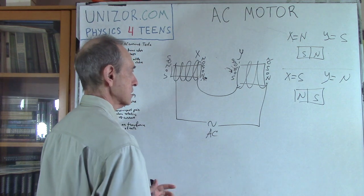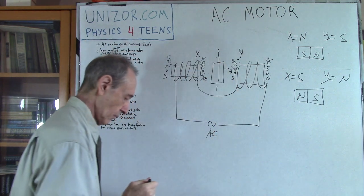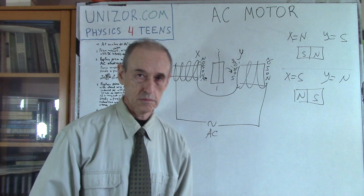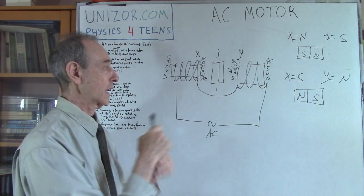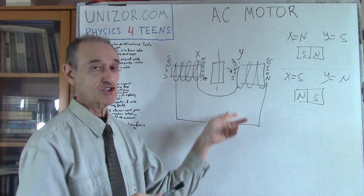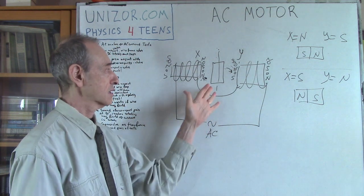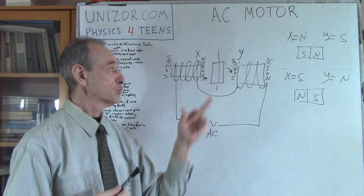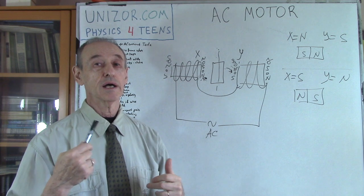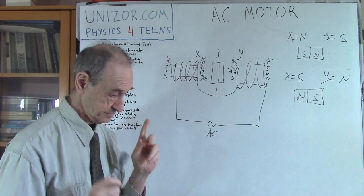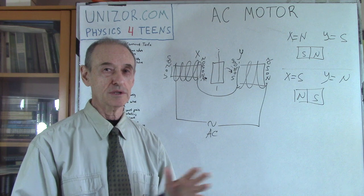My obvious choice is just to have a frame — a wire loop — that does not connect to anything. I'm thinking that maybe my electricity, which is actually changing — AC is changing, my electromagnetic field is changing — maybe in this particular case it will help me to induce some electricity here. And maybe with induced electricity it will start rotating.